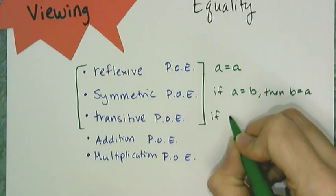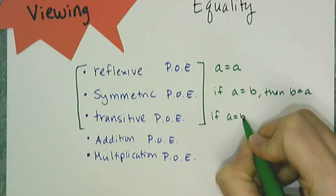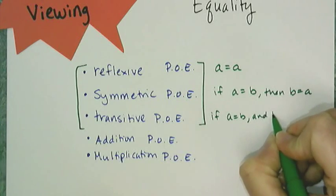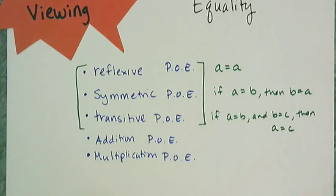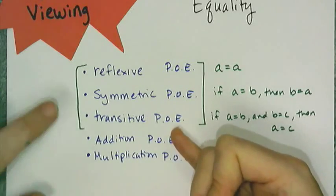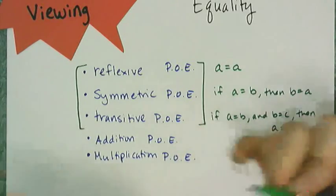And we don't use transitive very much at all. It says if A equals B, and B equals C, then A equals C. So we don't use this very much in Algebra 1. You use this a lot in geometry, but not so much in Algebra 1.